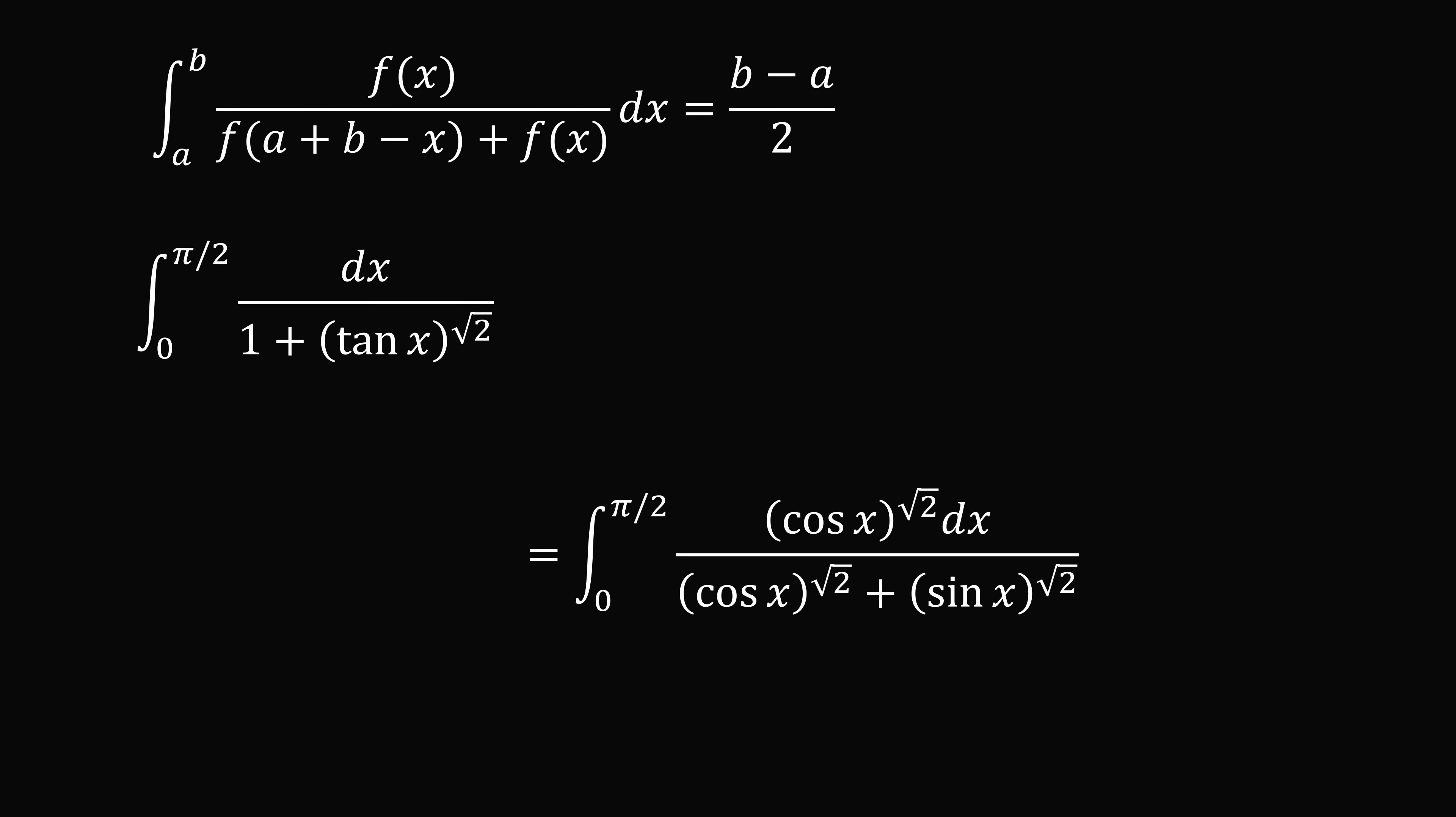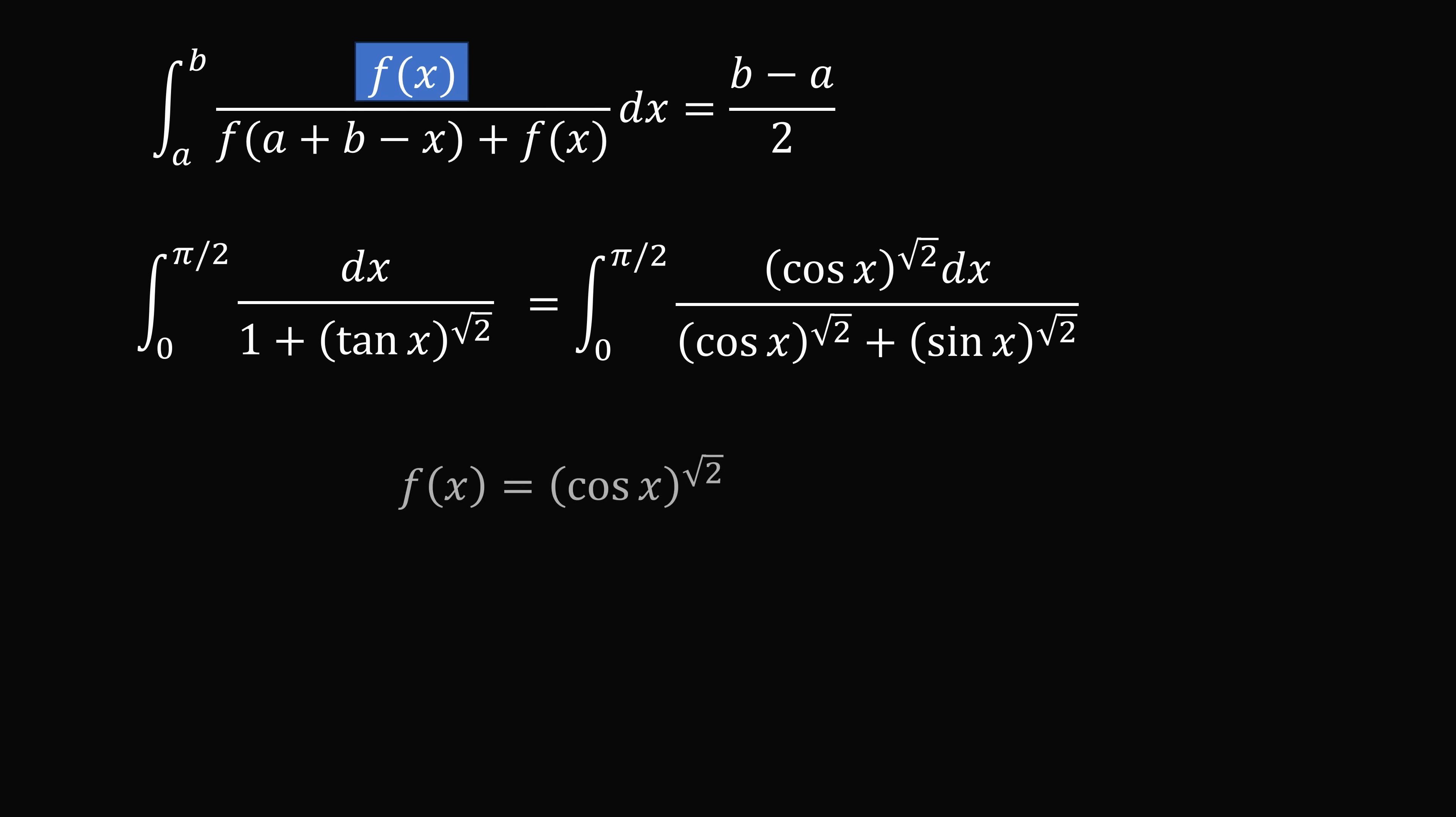Let f(x) be equal to cosine of x to the power of root 2. Then what is f(a + b - x)? Now a + b is equal to 0 plus pi over 2, so that's equal to pi over 2.